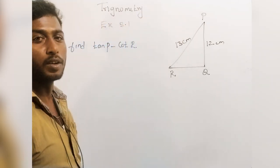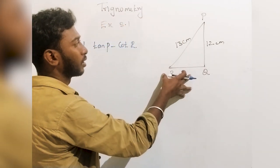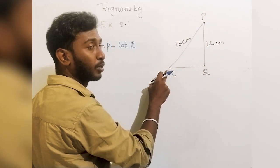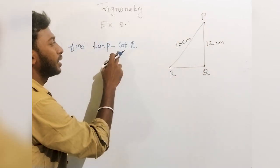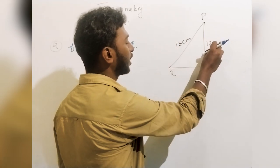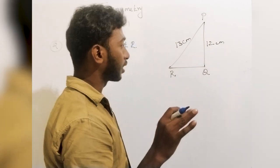This is question number 2 from exercise 8.1. I will give you a figure. PQ value is 12, PR value is 13. Find tan P minus cot R. I will give you two sides, and we will find the third side using the Pythagoras theorem.